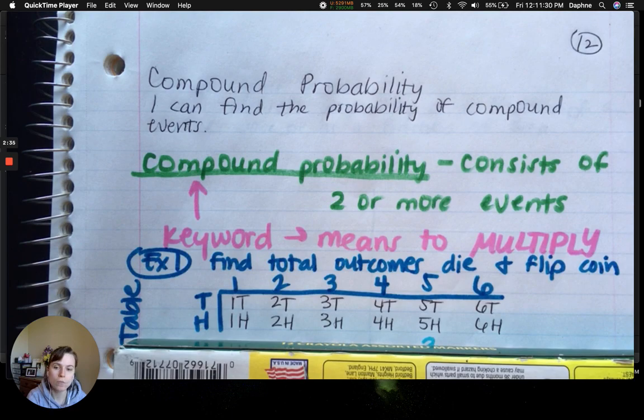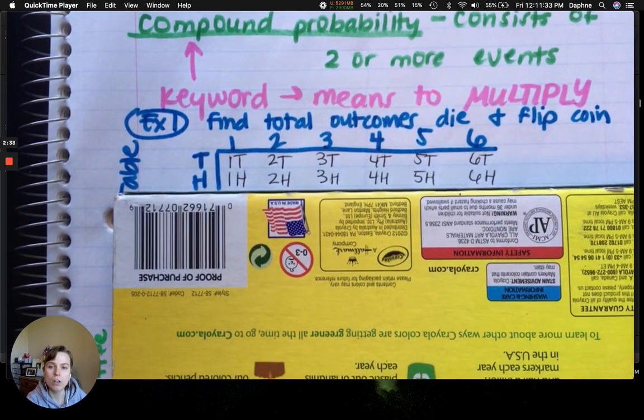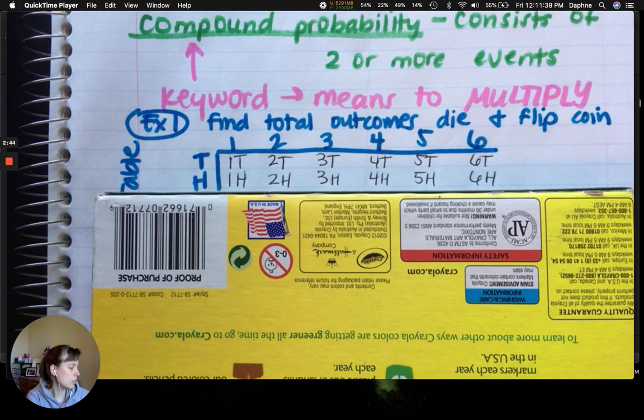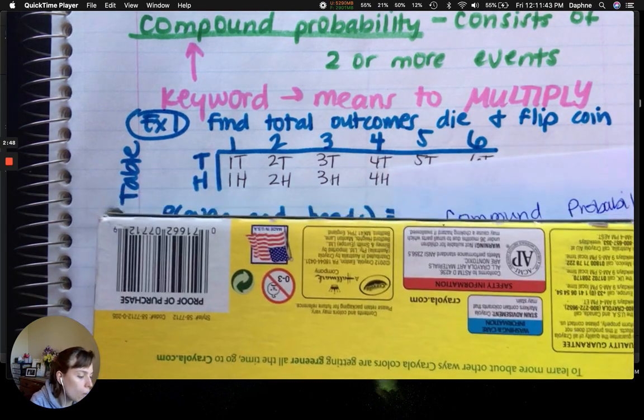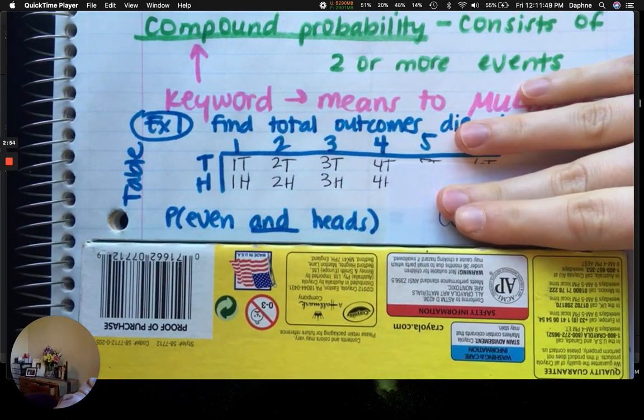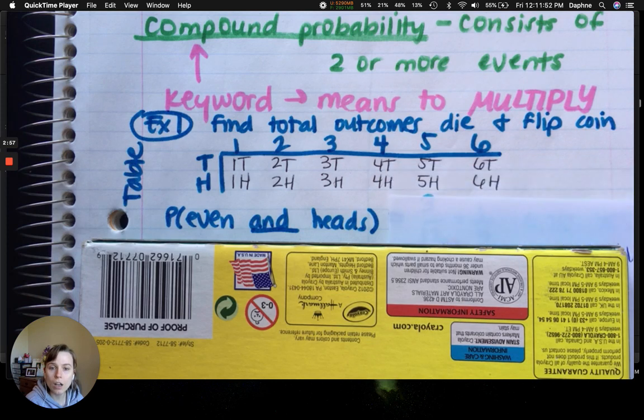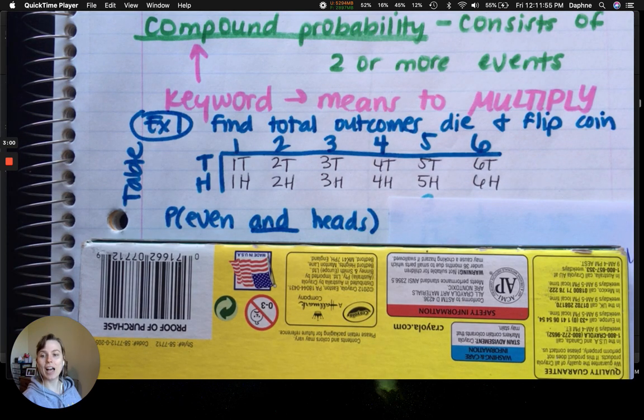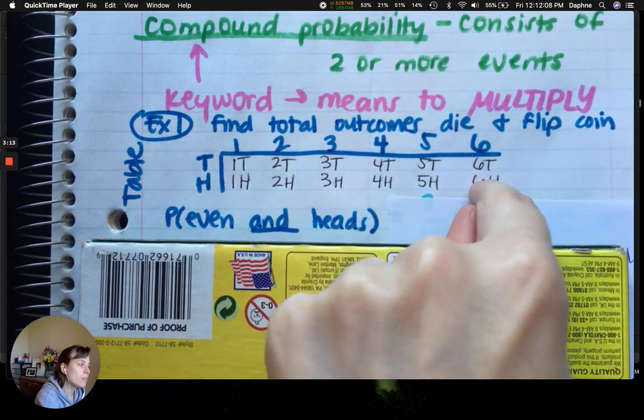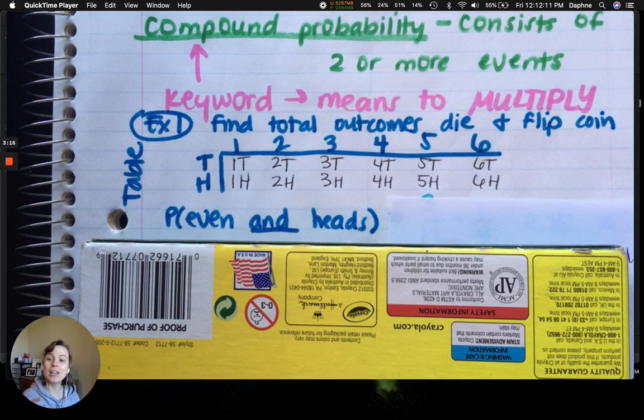So this should be your table now. Alright. And I'll move this up a little bit. So using this table, I want to find the probability of rolling an even and a heads. So I need to figure out one way to figure it out with the table is to figure out the total number of events happening. So total events of outcomes. So I have 1, 2, 3, 4, 5, 6, 7, 8, 9, 10, 11, 12 options happening. How many of those involve rolling an even and flipping a heads?